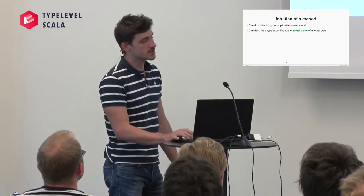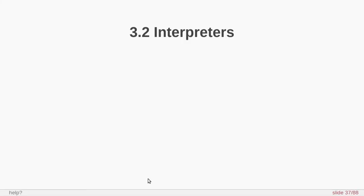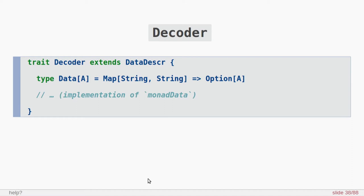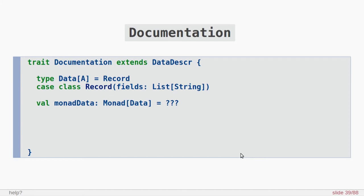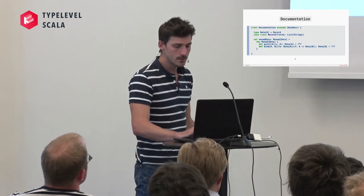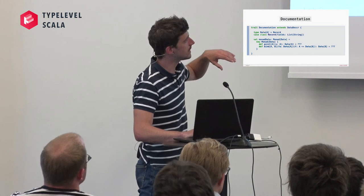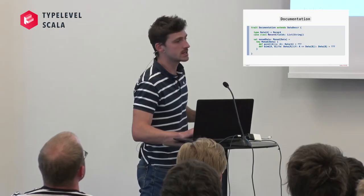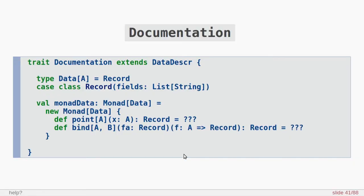If I change the trait to require a monad for data instead of an applicative, I get new operations and new powers. Now I'm able to write a for-expression that I couldn't write previously, and I can say: according to the actual value of the type field, I will either describe a circle or a rectangle. The fact that our abstract type is a monad gives us the ability to describe part of a data type according to the actual value of another field. That's very powerful — it makes it possible to describe sum types.